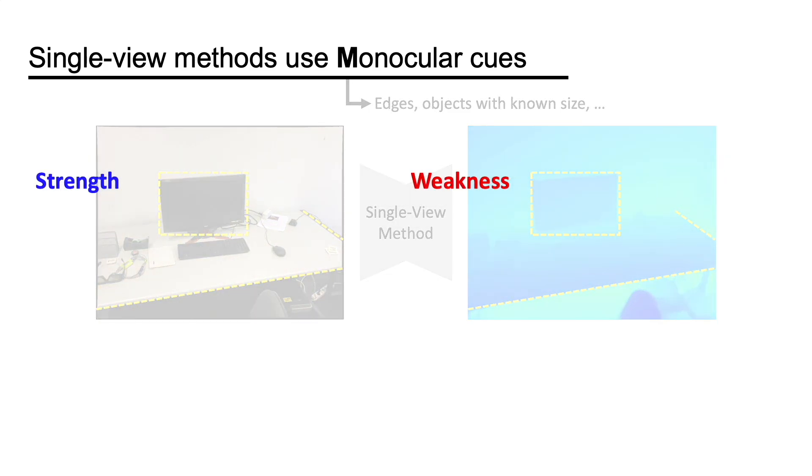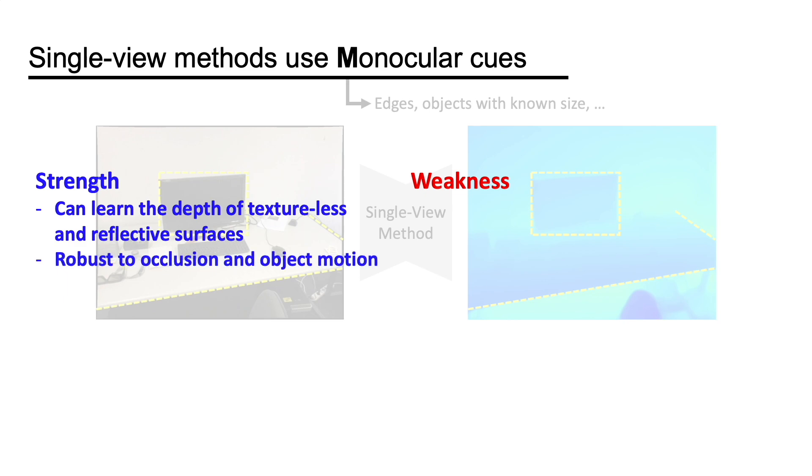With suitable supervision, the network can learn the depths of textureless and reflective surfaces. As the prediction is made on a single image, it is also robust to occlusion and object motion. However, the accuracy is limited due to the inherent ambiguity of the problem.